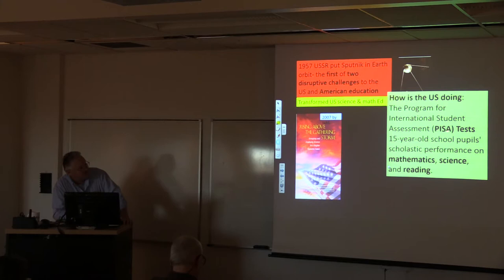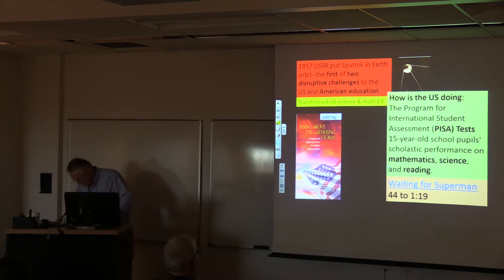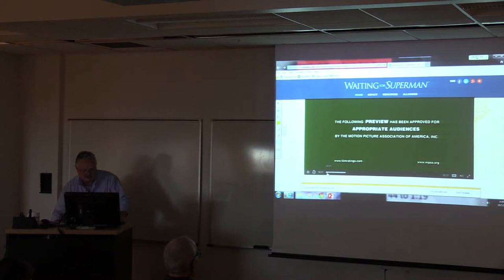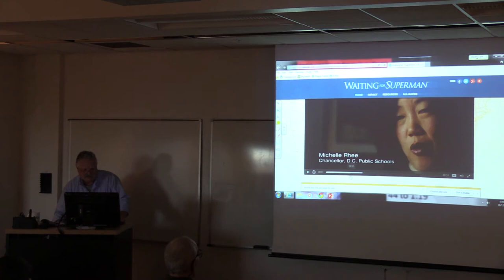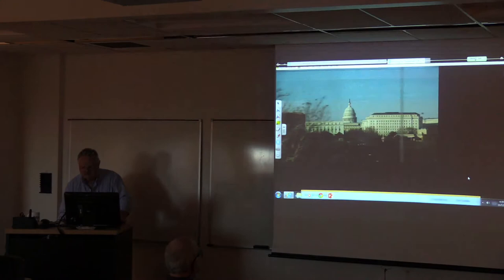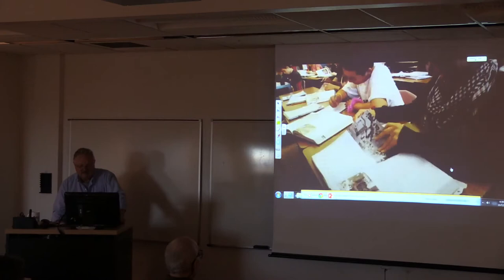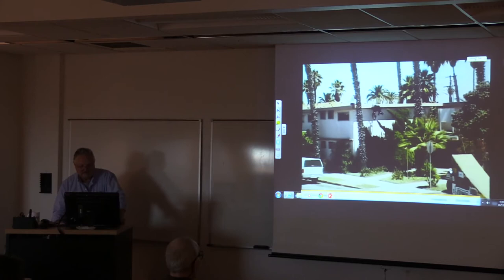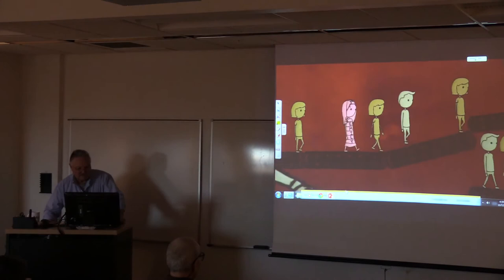One measure of how we're doing is called the Program for International Student Assessment, the PISA test. It's for 15-year-old pupils in their performance in math, science, and reading. Among 30 developed countries, we rank 25th in math and 21st in science. Almost every category we've fallen behind, except one. Kids from the USA rank number one in confidence.